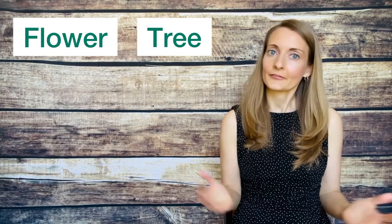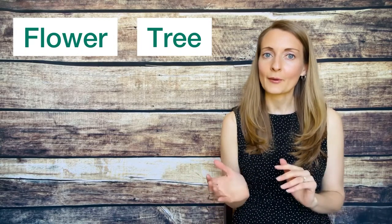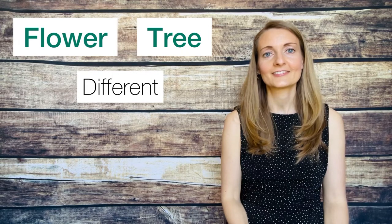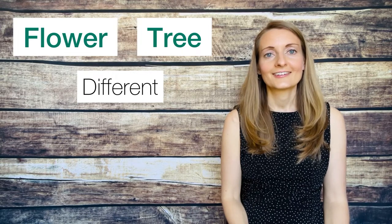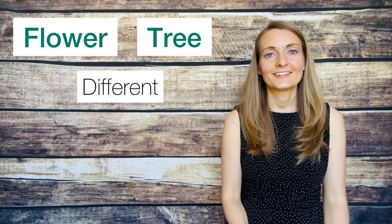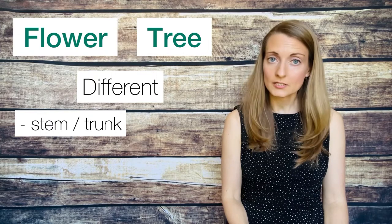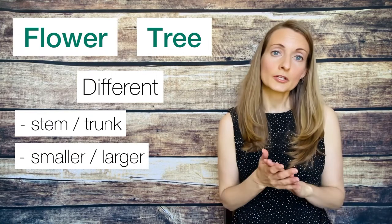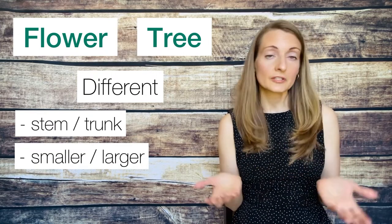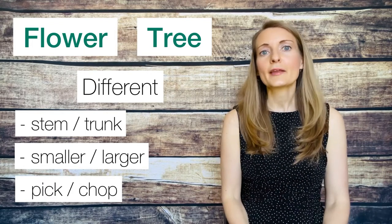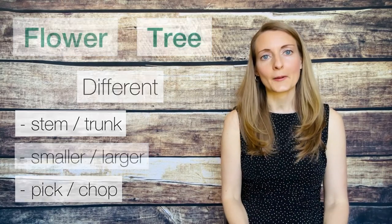And now guess what I'm going to ask? How are a flower and a tree different? Whisper your answer. Well, flowers have stems, but trees have trunks. Flowers are usually smaller and trees are usually larger. You pick a flower, but you chop a tree, and you may have thought of some other differences as well.